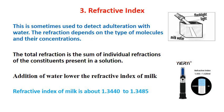The next physical property is the refractive index, sometimes used to detect adulteration of milk with water. Refraction depends on the type of molecules and their concentration in a liquid. The total refraction is the sum of individual refractions of the constituents present in solution. In the case of milk, addition of water lowers the refractive index. The refractive index of milk is about 1.3440 to 1.3485, and this property is useful in detecting adulteration.